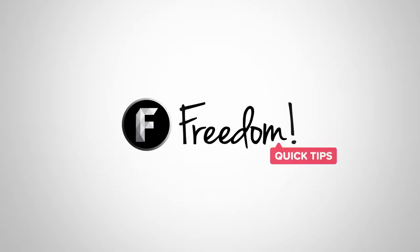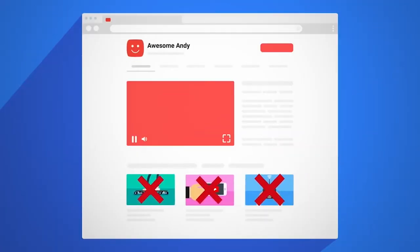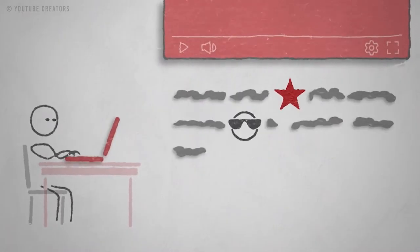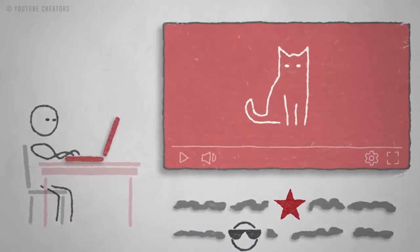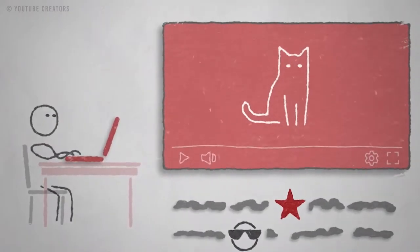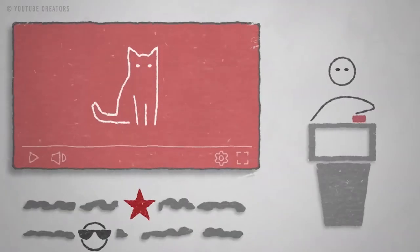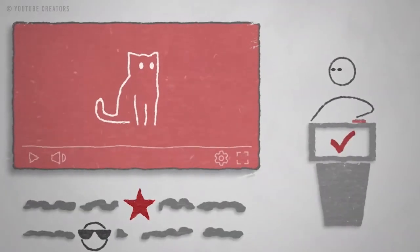Welcome to Freedom Quick Tips, where we provide N95 level advice to keep your channel safe and strong against demonetization. Spam, deceptive practices, and scam policies — try saying that five times really fast — are part of the community guidelines that deal with attempts to mislead YouTube's search and recommendation systems, aka the algorithm, viewers, or frequently both.